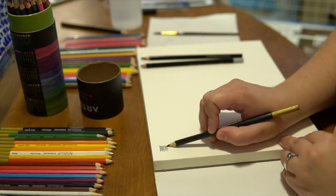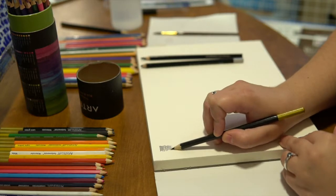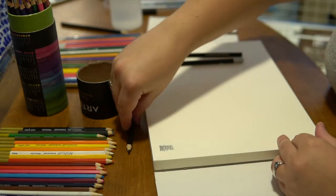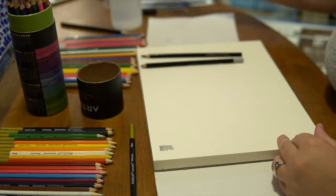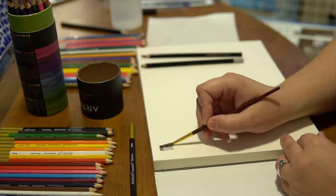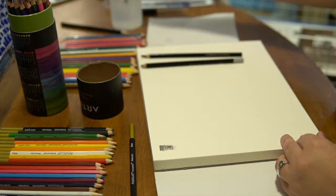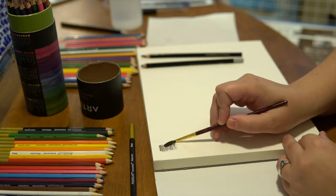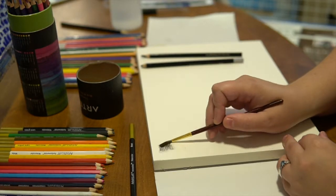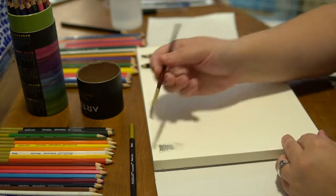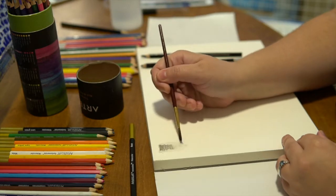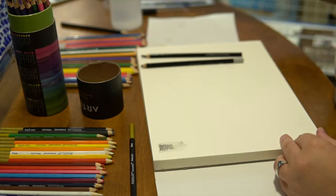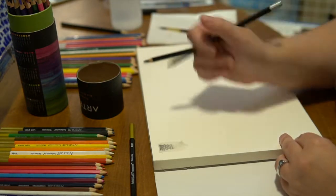You can kind of see the texture in the paper. Once we wet it, it's kind of light, and it doesn't really move very much. It's sort of like if you were to use a regular graphite pencil and then you try to get movement out of it, it's kind of the same.